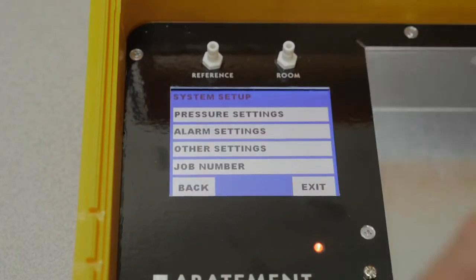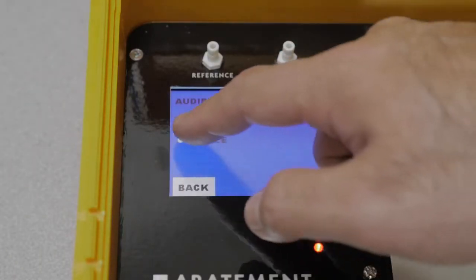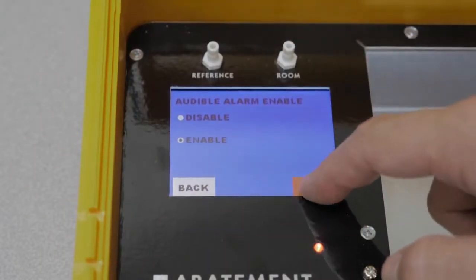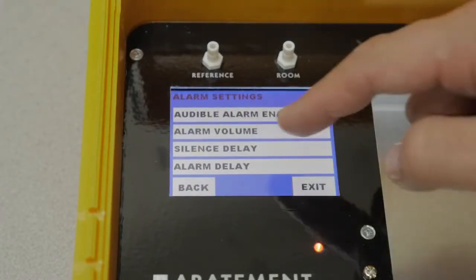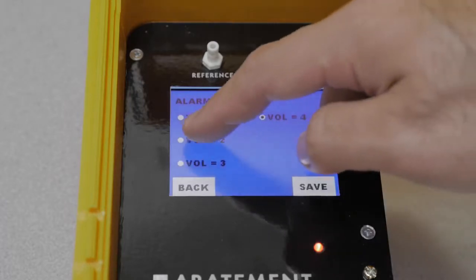Through system setting, you can access the alarm settings. First, you can enable or disable the audible alarm. You can then access the alarm volume to choose how loud you would like the alarm to be.